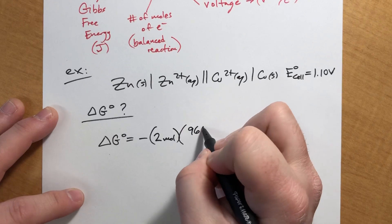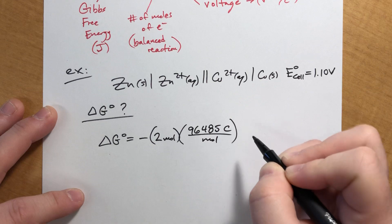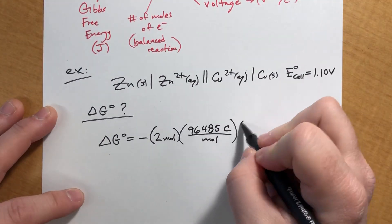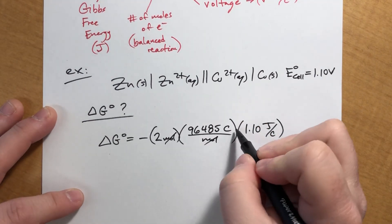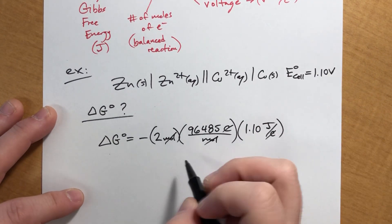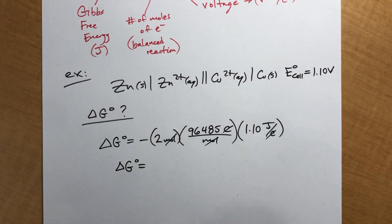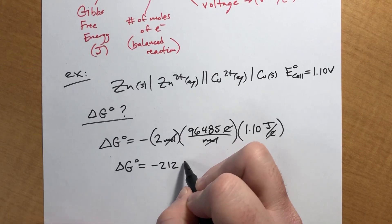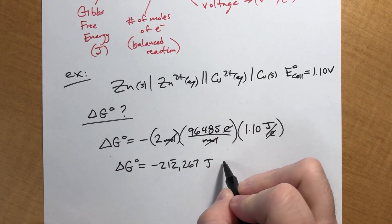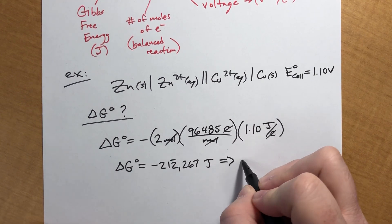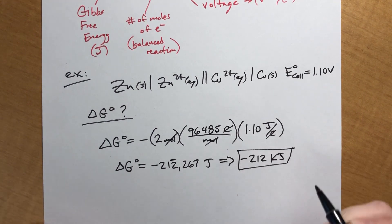Faraday's constant is a constant. So we're just going to plug that in. Coulombs per mole. And I'm going to write our voltage as joules per coulomb. So our moles cancel out, coulombs cancel out, and we get joules. And delta G for this particular voltaic cell comes out to be negative 212,267 joules. I'm going to convert that to negative 212 kilojoules.